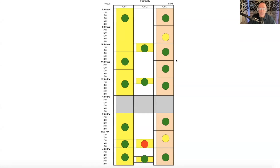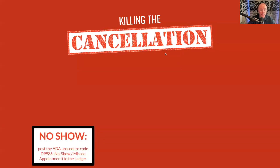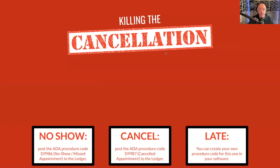You can always sequester a few 'crazies' — friends from high school or relatives — in a part of your schedule so they don't infect the rest of your day. Now here's the first instructional piece: I highly recommend you create three appointment codes that code behavior, not procedure. The first is 'no show,' the second is 'cancel,' and the third is 'late.' These are not the same behaviors — a no-show is not the same as a cancel, and a cancel is not the same as arriving late.